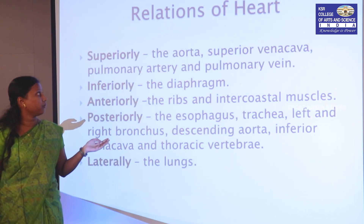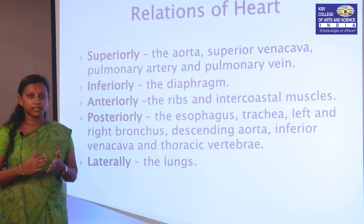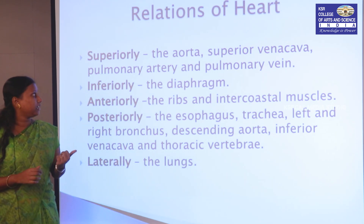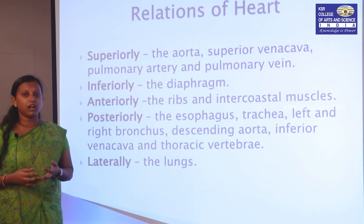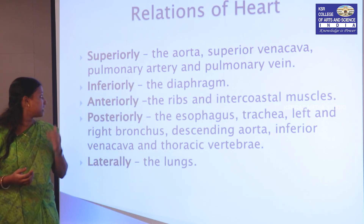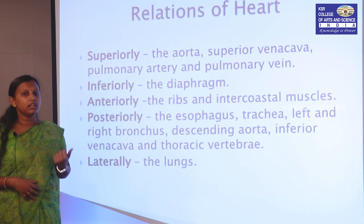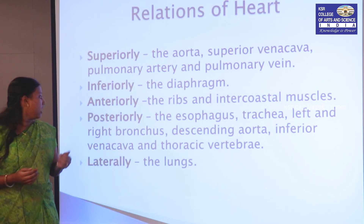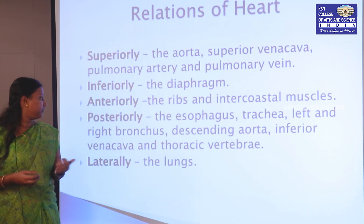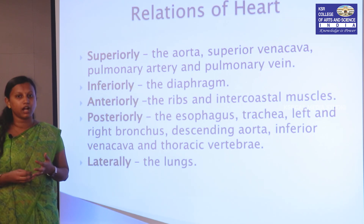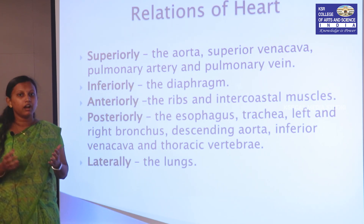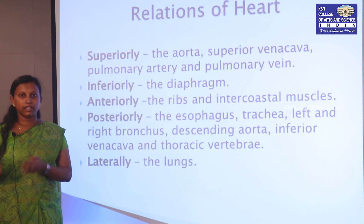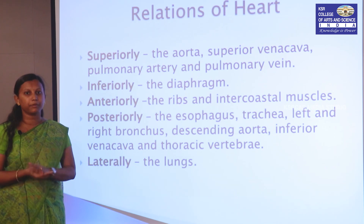The heart is related to various arteries, veins, and organs. Superiorly, it is related to the aorta, superior vena cava, inferior vena cava, and pulmonary arteries and veins. Inferiorly, it is attached to the diaphragm. Anteriorly, the ribs and intercostal muscles are related to the heart. Posteriorly, the esophagus, trachea, left and right bronchi, descending aorta, inferior vena cava, and thoracic vertebrae are attached. Laterally, the lungs are attached, with the left side of the lung overlapped by the heart.